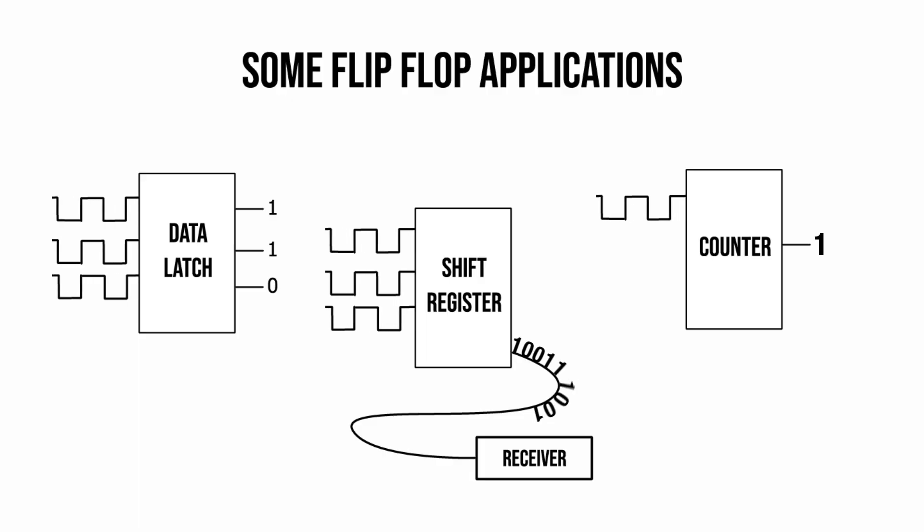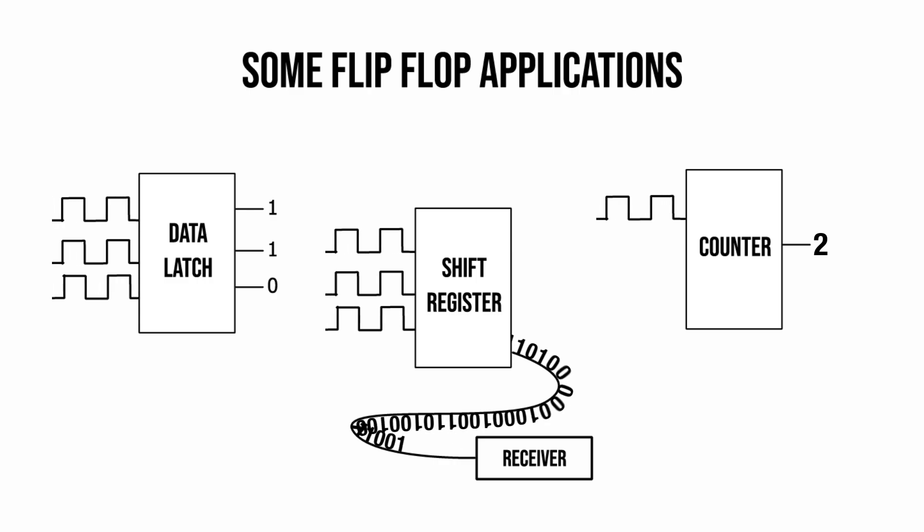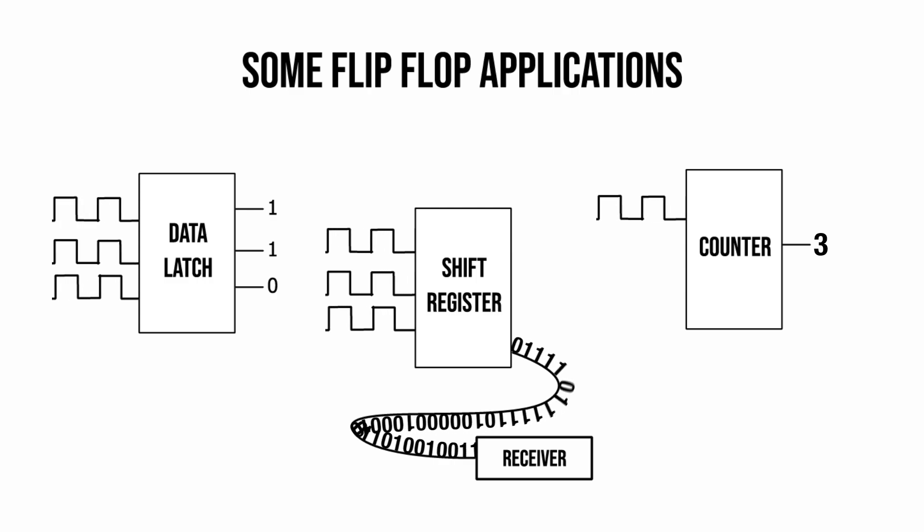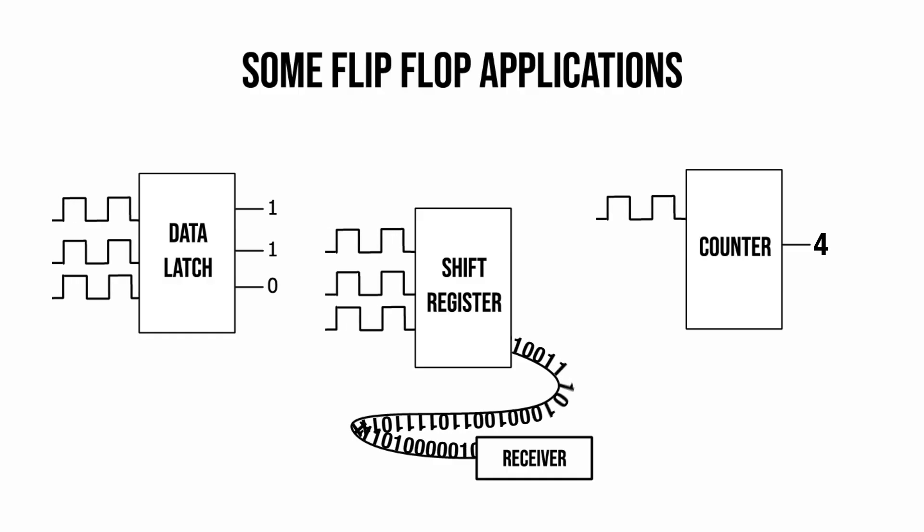So a flip-flop allows you to do some interesting things. By combining some of these gates, we can construct things like a memory storage device or shift register that may take in parallel bits and rotate them out to be transmitted over a transmission line. Or maybe we can make an up-down counter circuit. These are just a few applications, but they have massive potential.